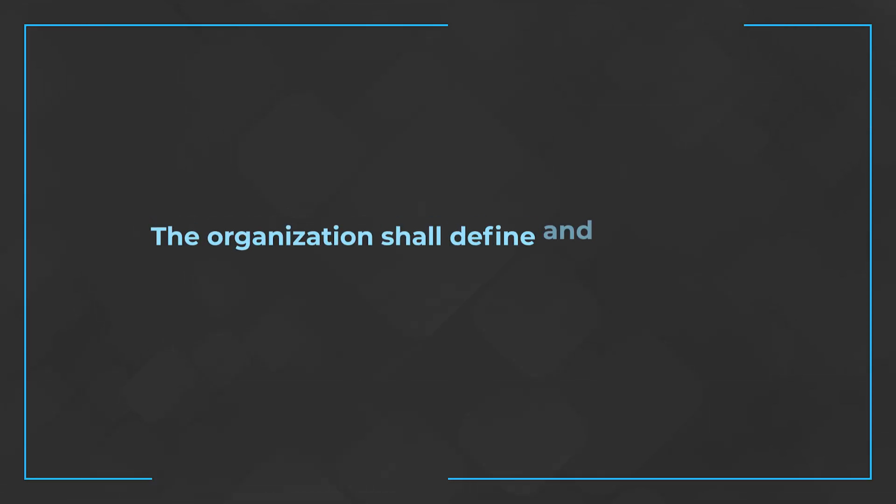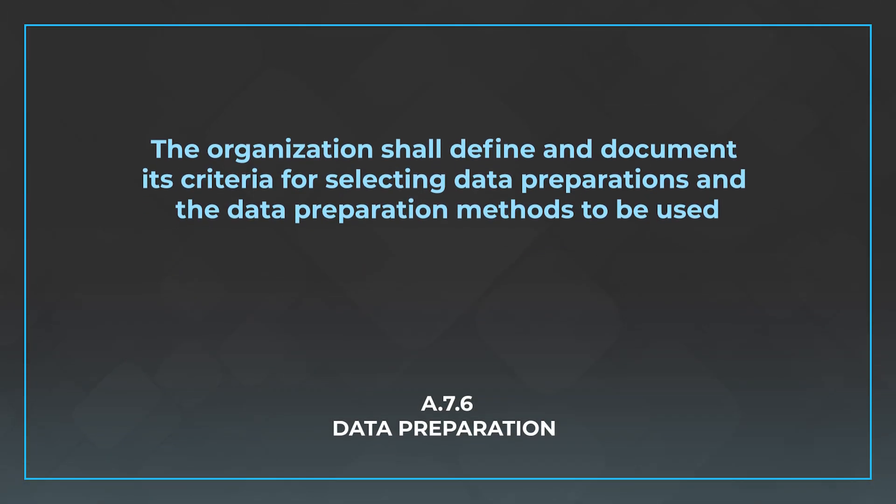The last control is A.7.6, Data Preparation. We need to make sure that we are documenting criteria for ensuring that data is properly prepped for consumption, use, training, etc. The control says the organization shall define and document its criteria for selecting data preparations and the data preparation methods to be used. It's a very broadly worded control — interpret it within your own context — but ultimately you need to sit down and write out the criteria you're using for data preparation selections, clearly articulating what it means to prepare data for consumption by an AI system.